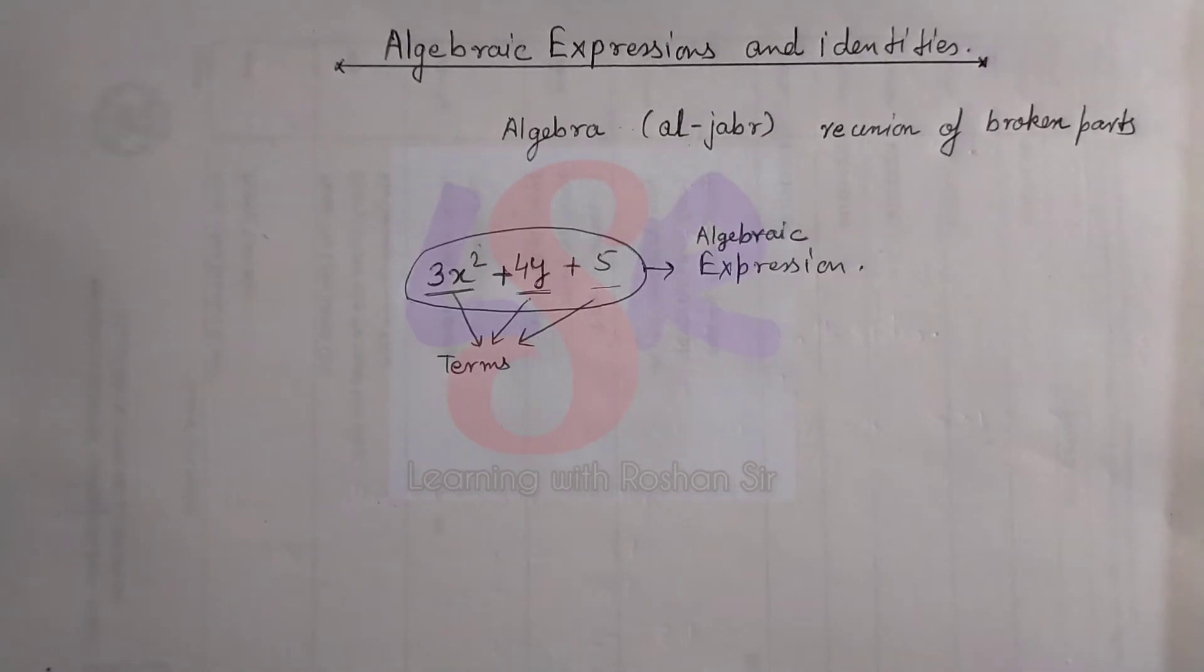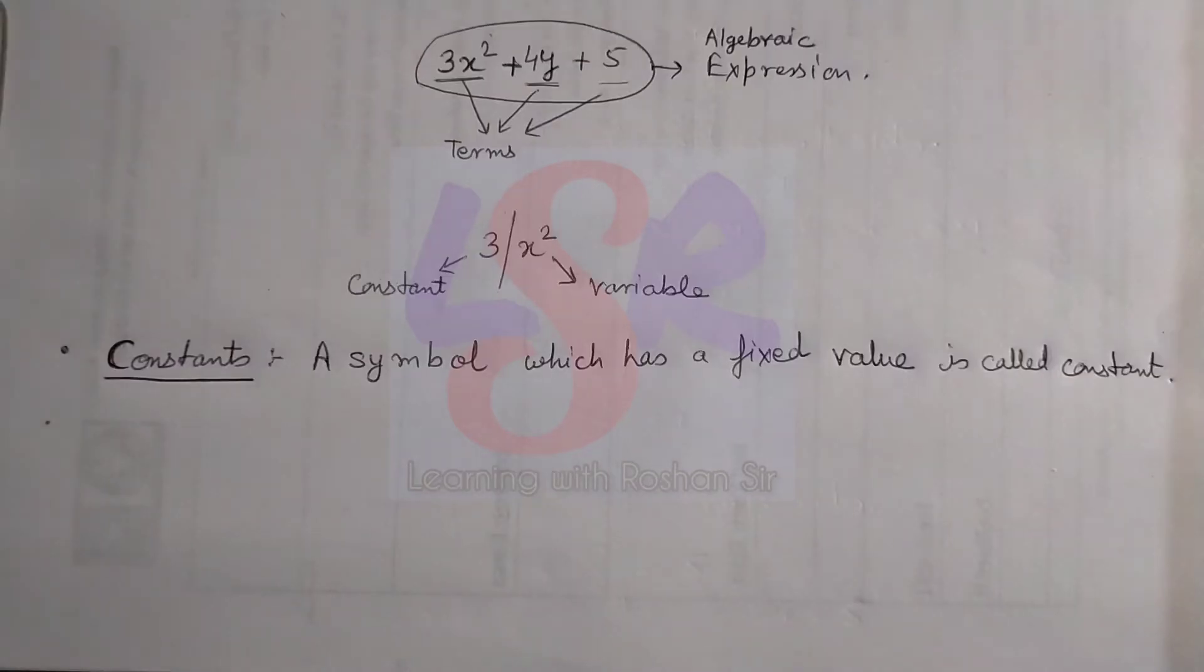Now in each term we have variables and constants. Suppose we take 3x square. In this case, 3 is constant and x square is variable. Now let's have some definitions of the fundamental concepts. The very first one is constants.